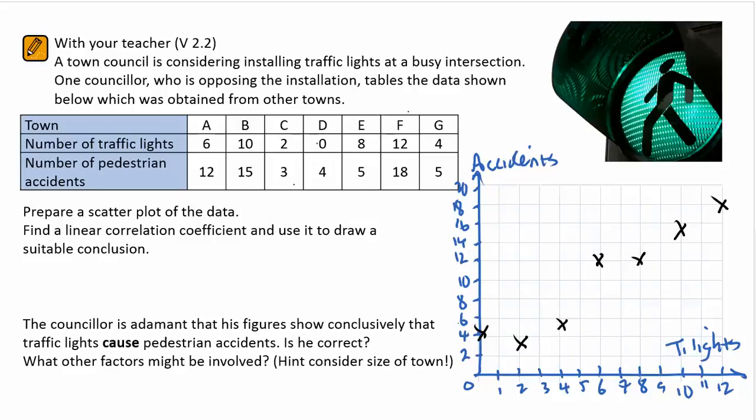In V2.2, we're asked to consider a councillor's suggestion opposing the installation of traffic lights. The number of traffic lights is our independent variable and the accidents our dependent variable.